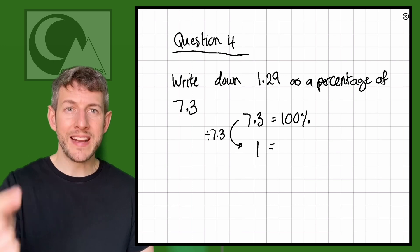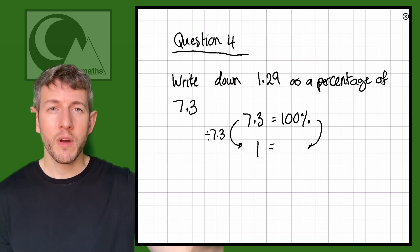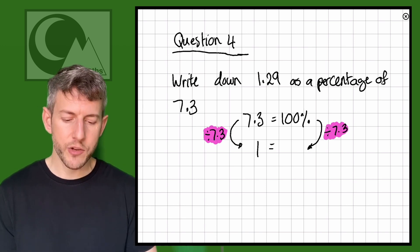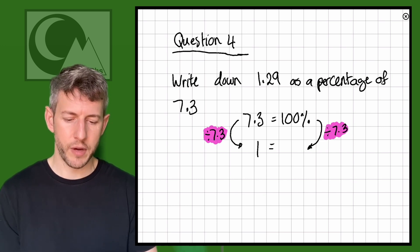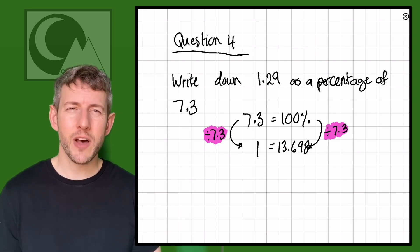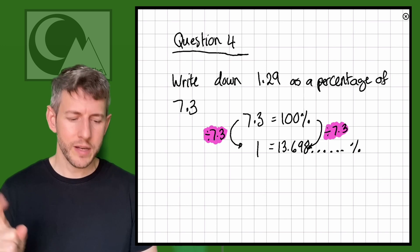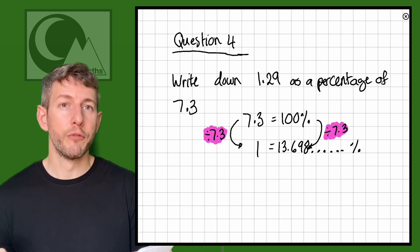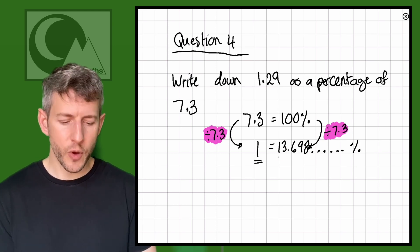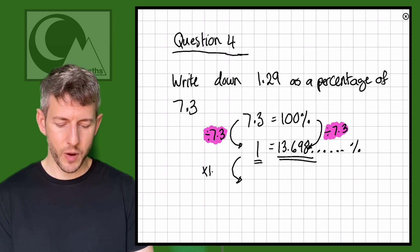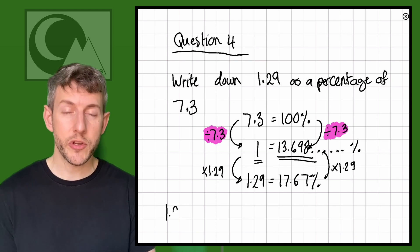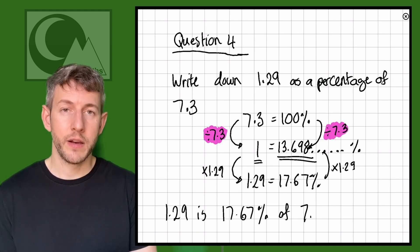Now remember, 7.3 divided by 7.3 gives us 1. So because this is directly proportional, we've got to divide by 7.3 on the other side as well. So 100% divided by 7.3. Now remember, that means we do 100 first. So 100 divided by 7.3, and here we go. That equals 13.69863014. So that is our value of 1. If 7.3 is 100%, 1 is 13.69863014%. Now we want to find out how much 1.29 is as a percentage. So we know that 1 is worth 13.69%, so we multiply this by 1.29, and that equals 17.67. So we would know that 1.29 is 17.67% of 7.3.